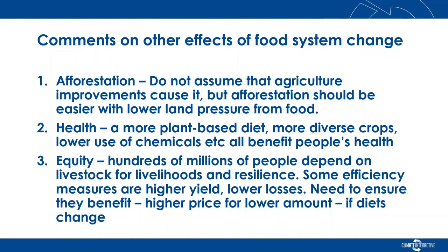Next, many of the practices that cause a more efficient livestock system would mean higher yield and lower loss of livestock, which, if implemented fairly, should be a benefit to the hundreds of millions of people who depend on livestock for part of their livelihoods. But you also have to consider that if we are transforming diets, those same people who depend on livestock lose some market. Change should be designed so that the most vulnerable people do not suffer — for example, by getting paid more for lower amounts but higher quality animal products to meet the needs of a population with different diets.